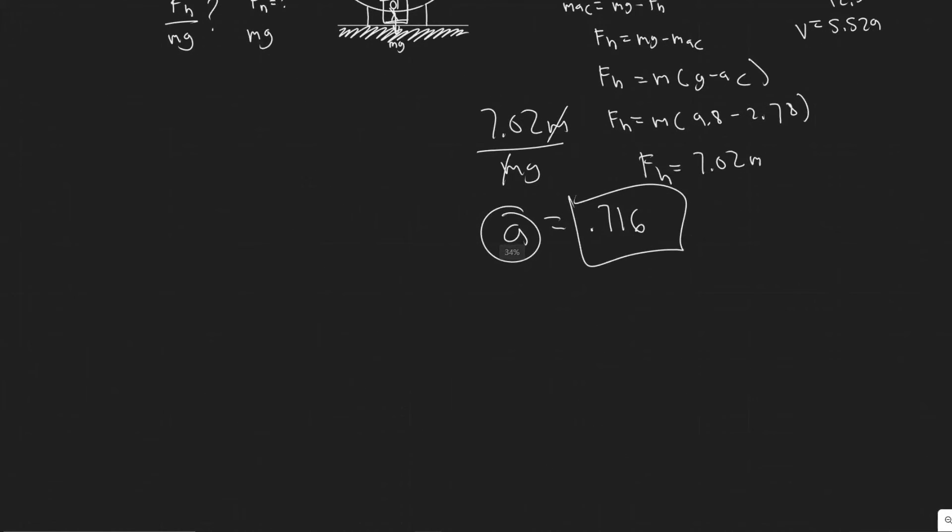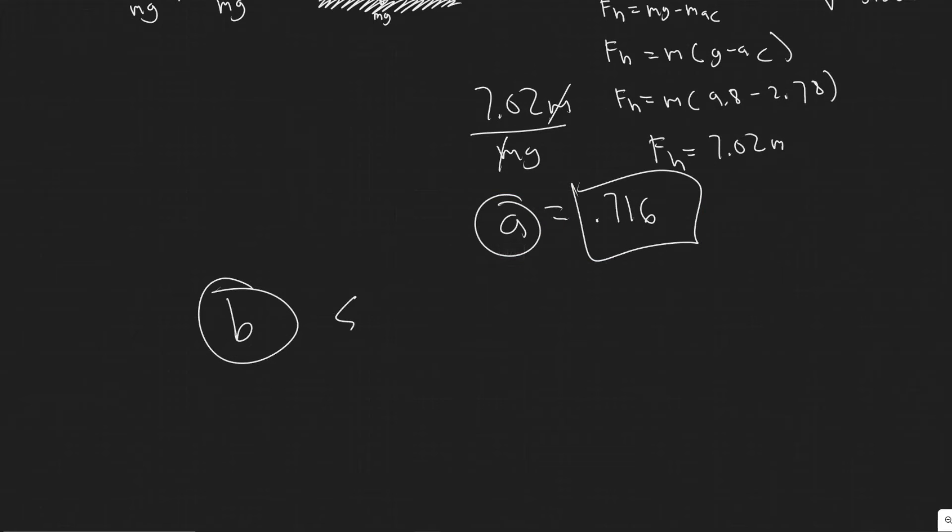And then let's go ahead and do B now. So for B, we're doing at the bottom, but it's essentially the same process. Nothing actually changes. But yeah, so once again, you sum the forces because we need to get the normal force, it equals Mac.